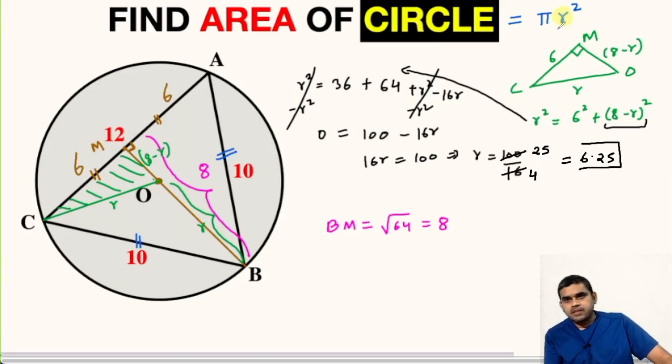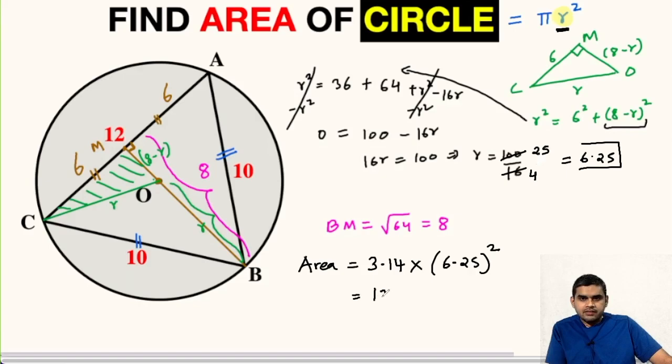We can simply substitute it here and get the value of area of the circle. So area of the circle will be π, that is 3.14, times the radius, that is 6.25 squared. If we multiply this, we will get 122.6 square units. So the area of this circle is 122.6 square units.